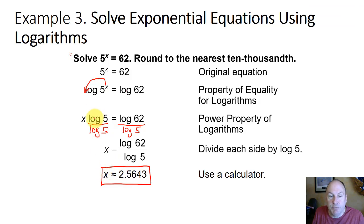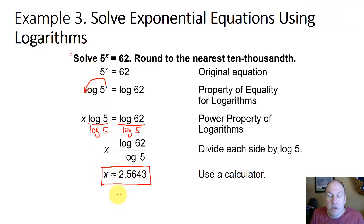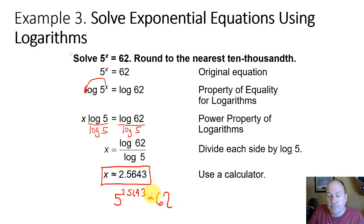Of course, you can always plug that back into the original equation to check. As a check, 5 to the 2.5643 equals approximately 62.